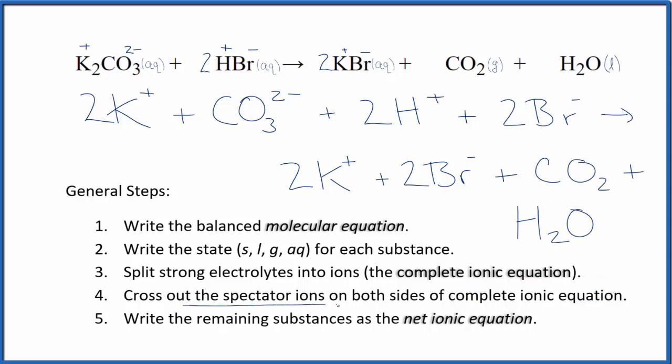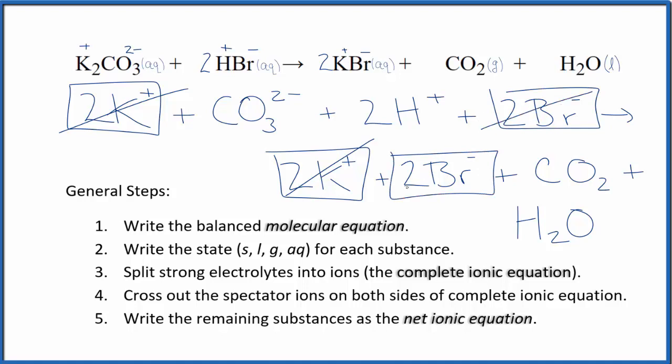Now we're going to cross out the spectator ions. They're on both sides. In the reactants, I have 2 potassium ions, and in the products, those are spectator ions. We'll cross those out. And then 2 bromide ions right here, and again in the products, spectator ions. Cross them out. What's left is the net ionic equation for K2CO3 plus HBr.